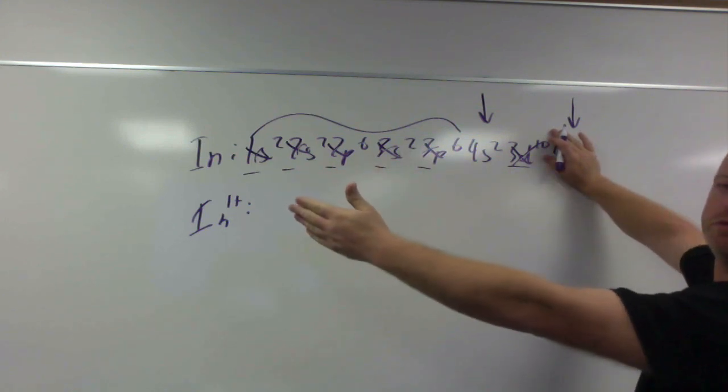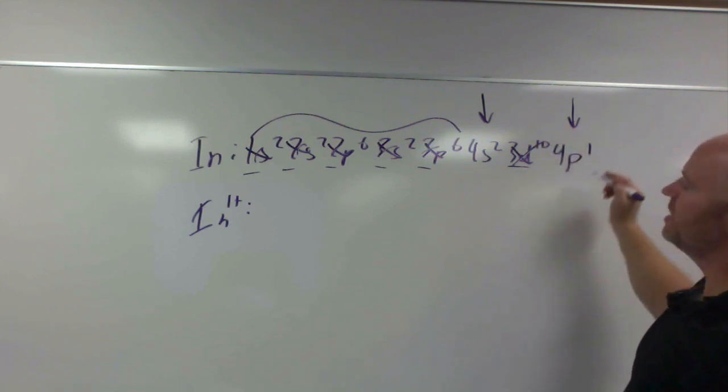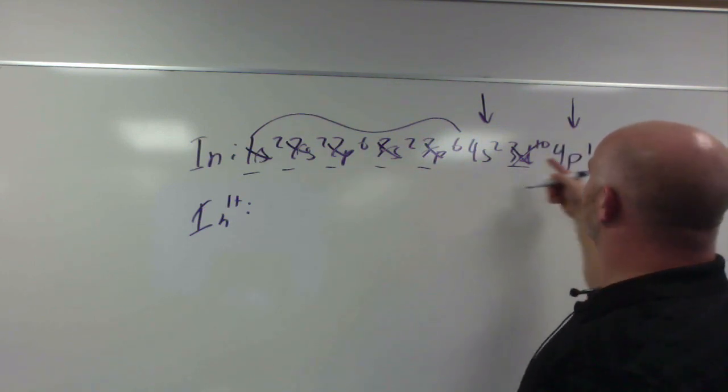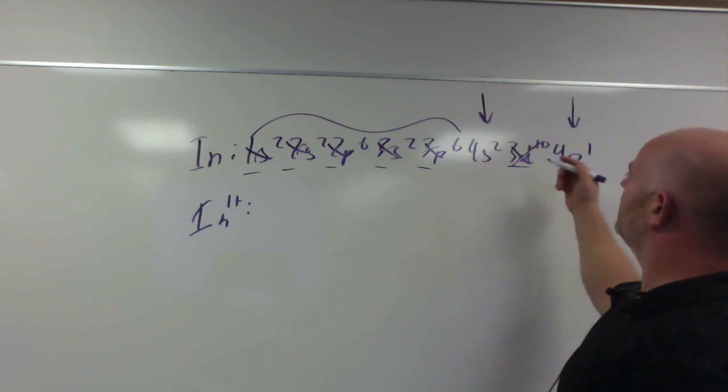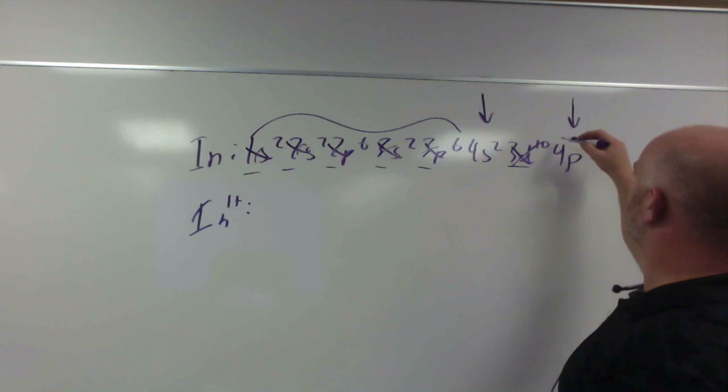If it gets rid of this electron from the p orbital, now it has everything full. So if it has everything full, that's a stable configuration for it. So becoming a 1 plus works really well, because it ends up having everything full for its orbitals, getting rid of this kind of partially full orbital.